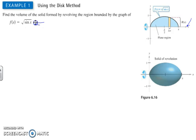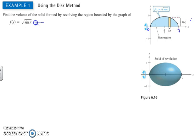This is what the graph of f(x) equals the square root of sine of x looks like. As you can see, this function is bounded at the value of 0 and at pi, so we know that we're going to be finding the volume from 0 to pi.